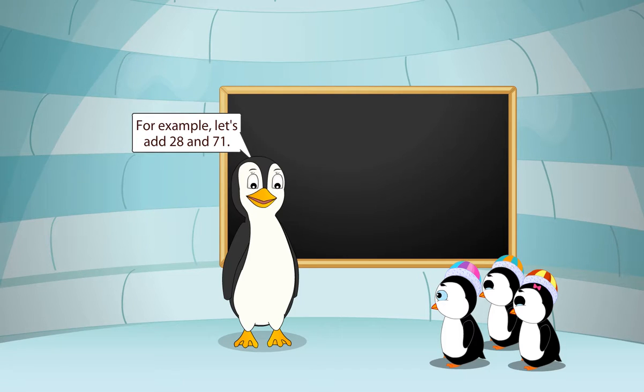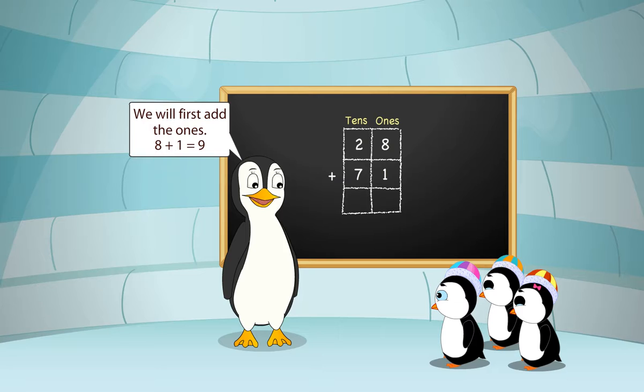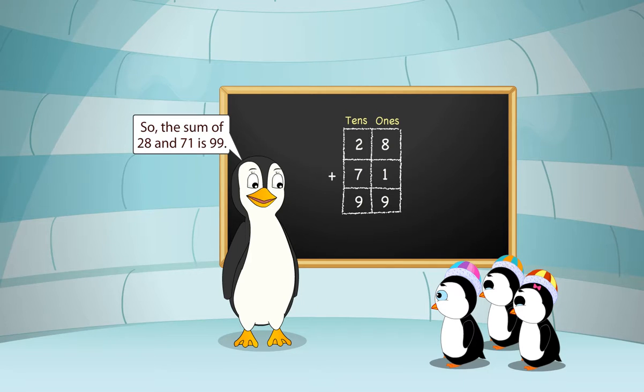For example, let's add 28 and 71. We will first add the ones. 8 plus 1 is equal to 9. Then we add the tens. 2 plus 7 is equal to 9. So, the sum of 28 and 71 is 99.